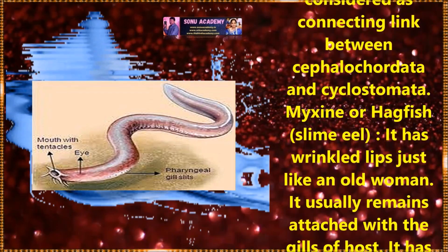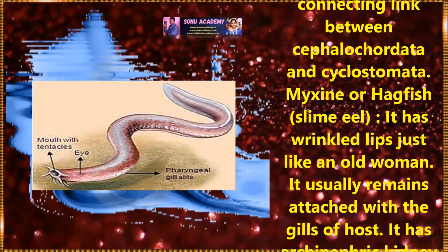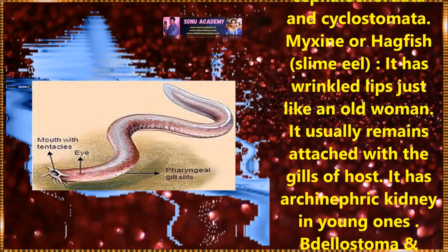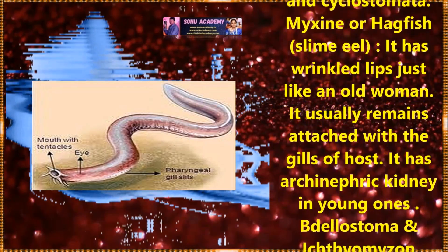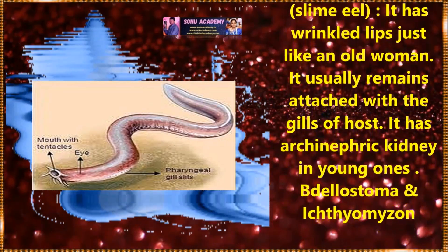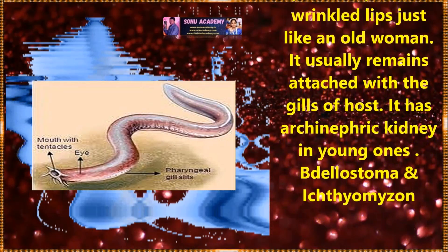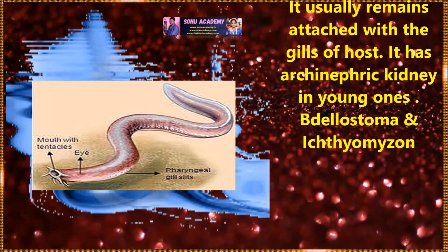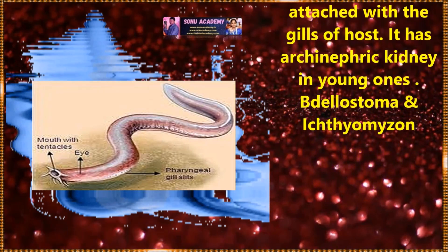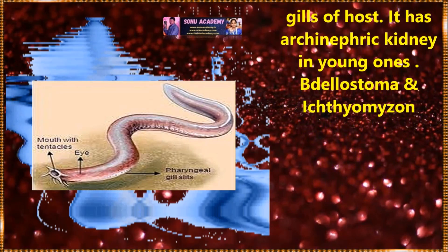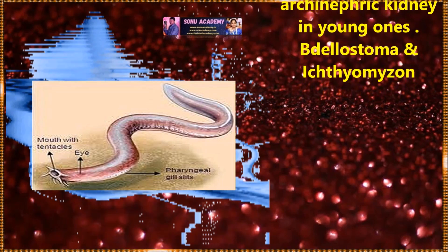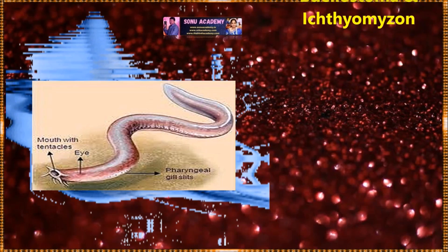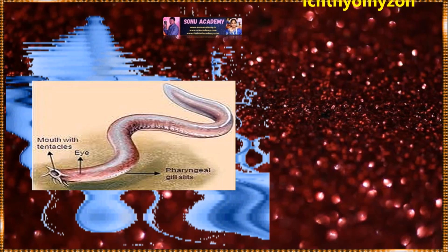Another example is Myxine, or hagfish. It has wrinkled lips just like an old man. It usually remains attached with the gills of the host. It has archinephric kidneys in young ones. Further examples include Bdellostoma and Ectomyzon.